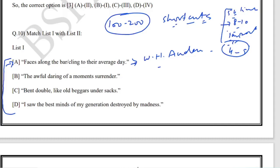'The awful daring of a moment's surrender' - this is by T.S. Eliot from The Wasteland, from the part 'What the Thunder Said.' 'Bent double, like old beggars under sacks' - this is by Wilfred Owen.